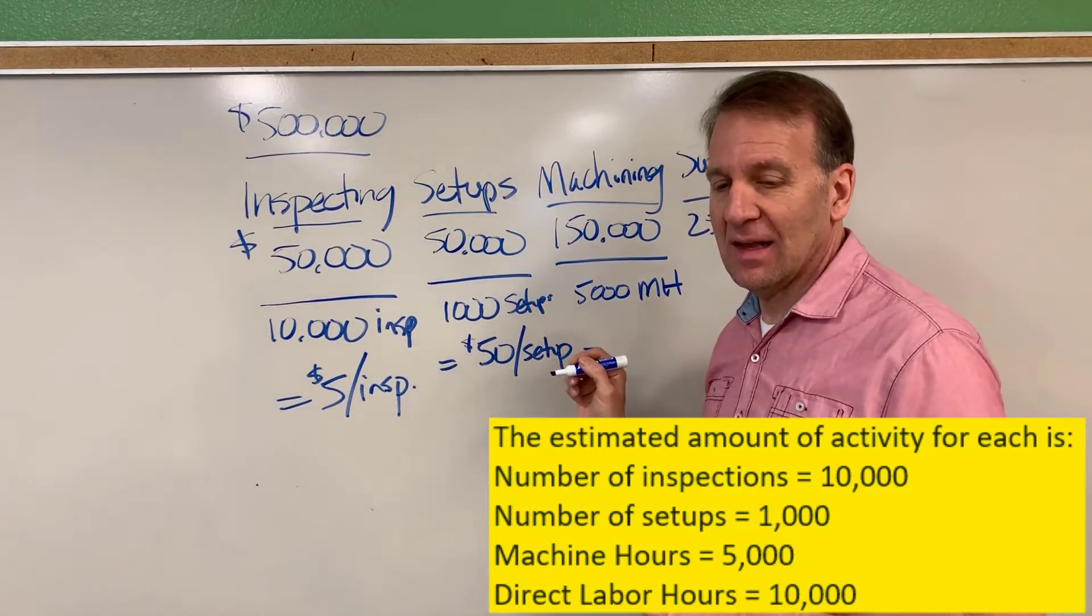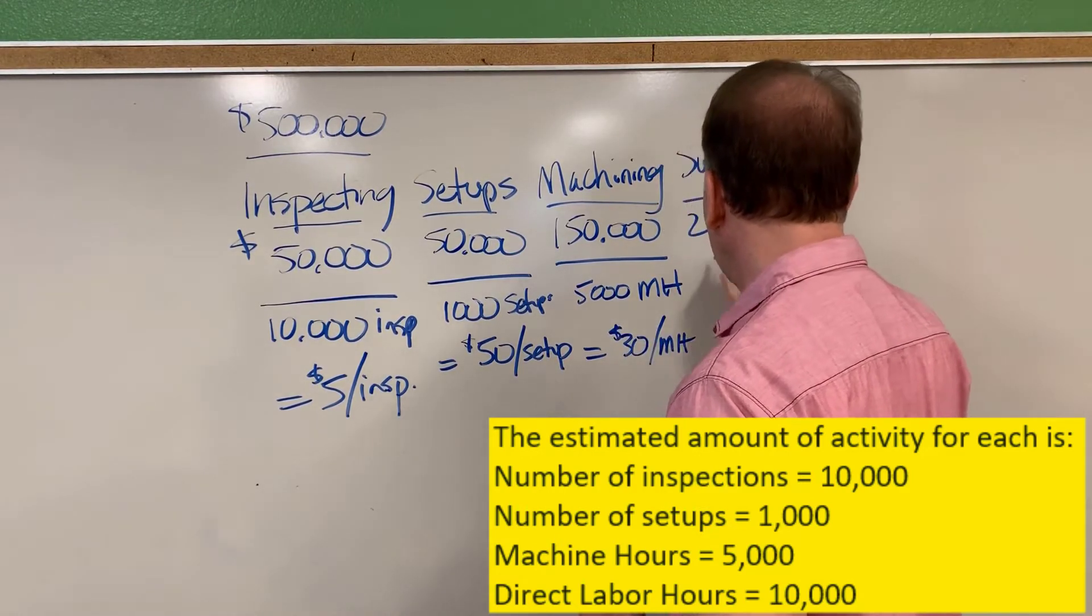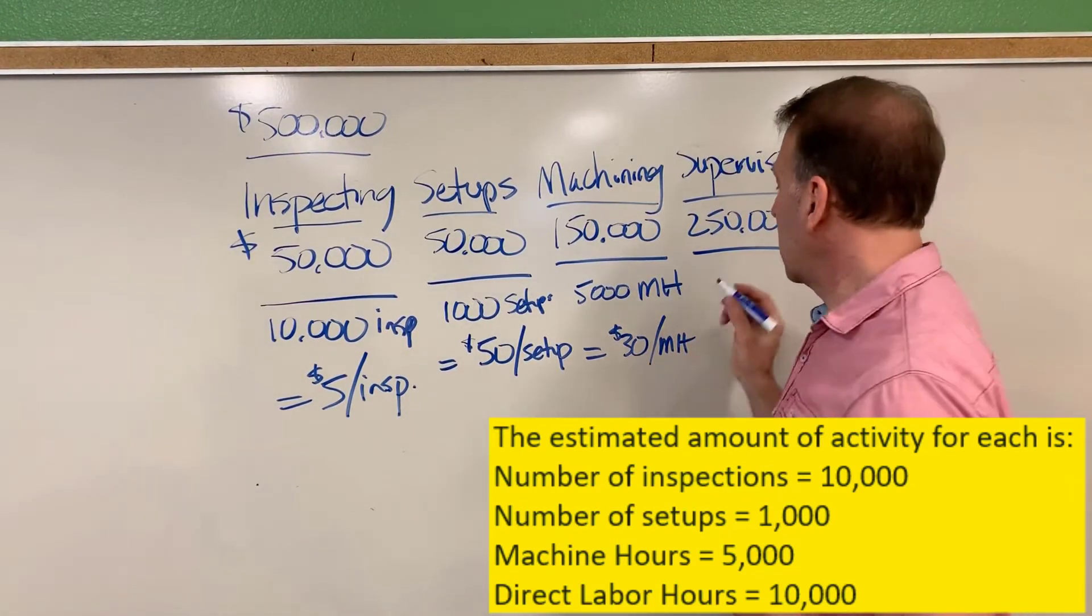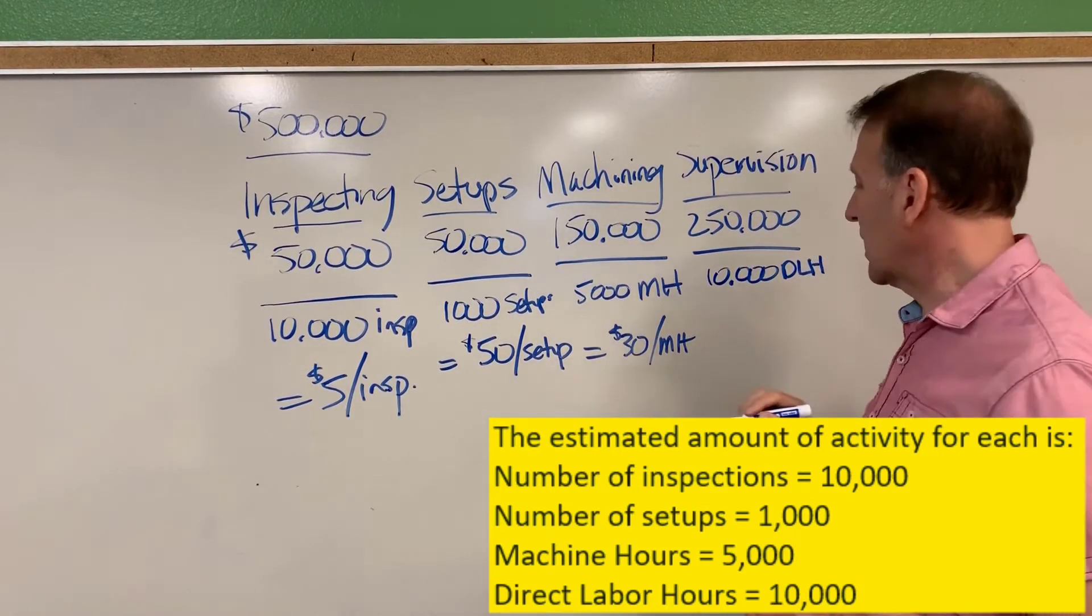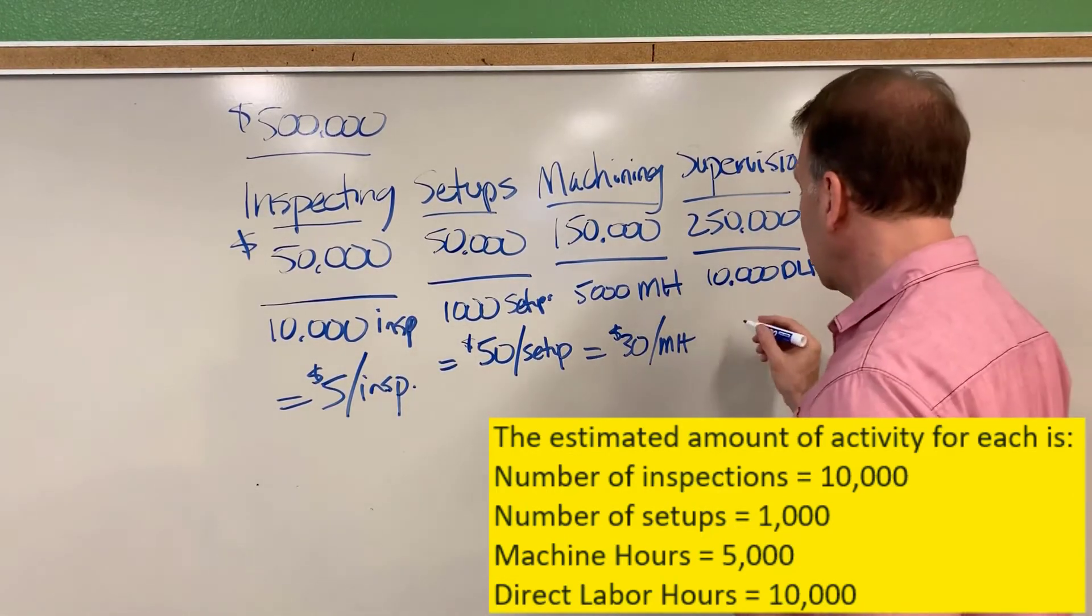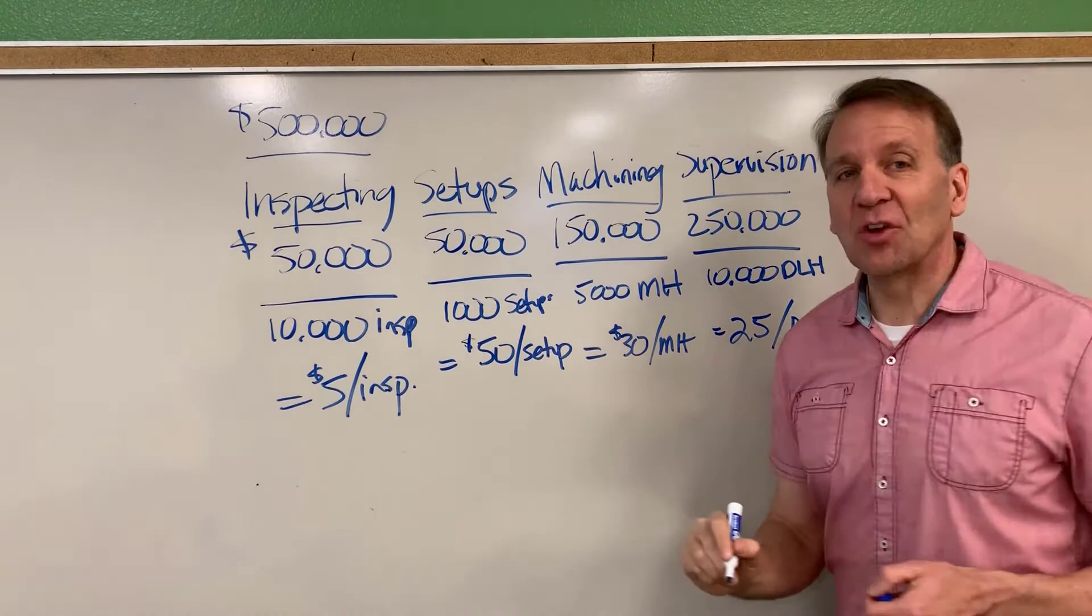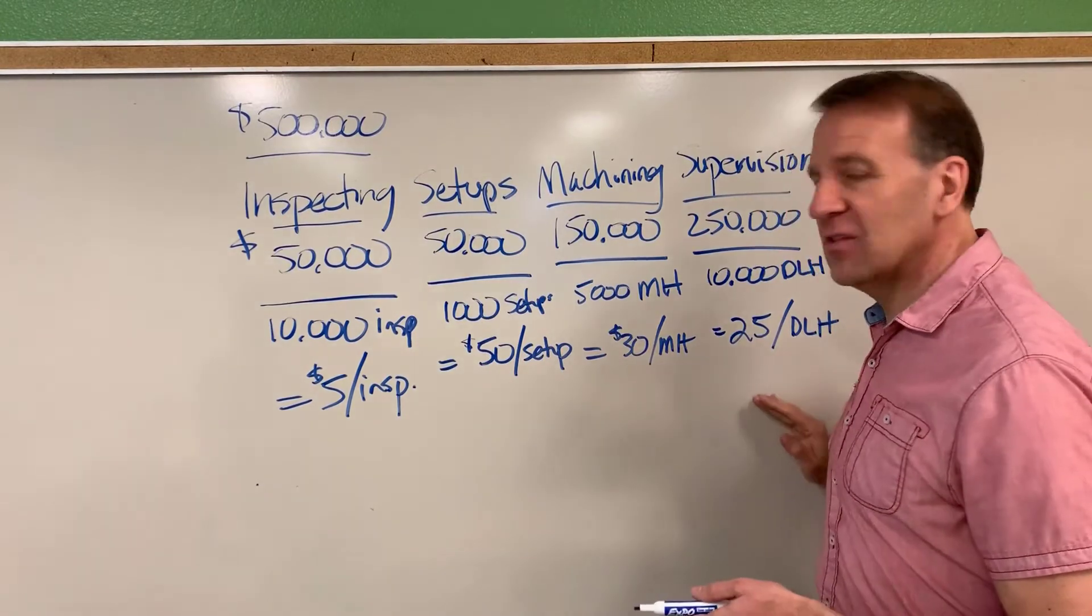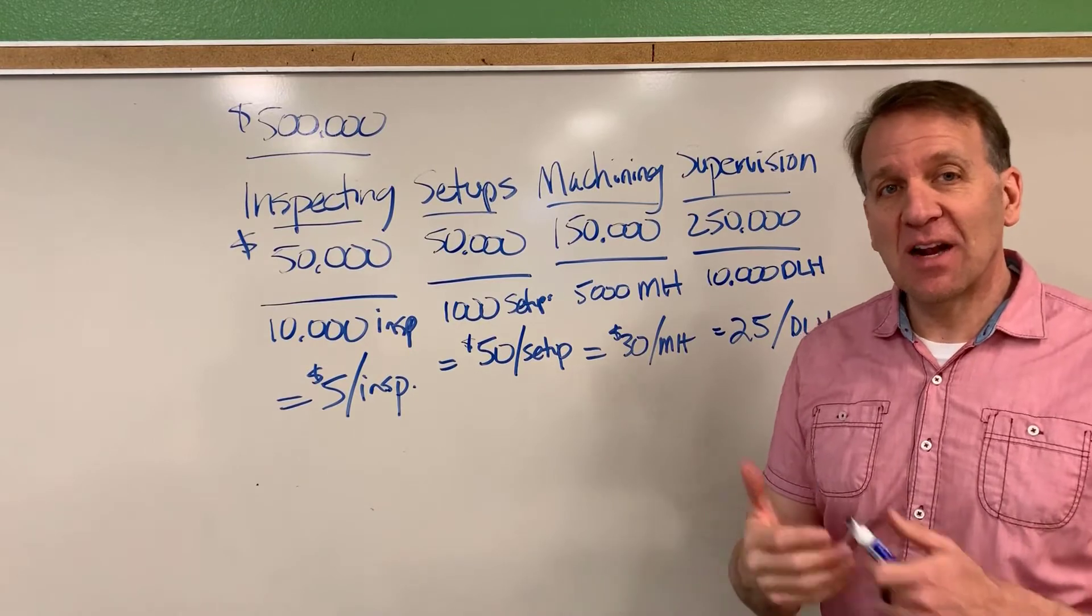And then the last one is supervision. And we're going to allocate this based off of direct labor hours. So 250,000 divided by 10,000 direct labor hours gets us $25 per direct labor hour. So now instead of having just one rate, as we did previously, we now have four rates in order to allocate our overhead. So it's the same thing, it's just instead of one, we now have four.